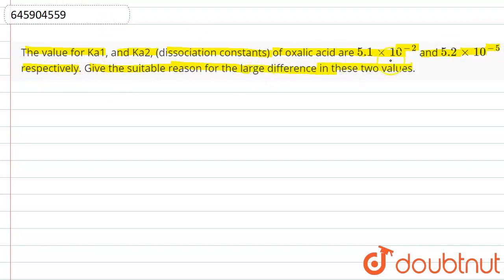So first of all, how are Ka1 and Ka2 given here? Oxalic acid basically has two OH groups. This compound is called oxalic acid. When oxalic acid loses its first H+ ion, Ka1 is defined.